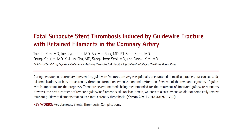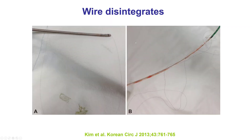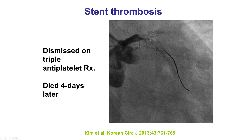The last case is a published example of what can go wrong if guidewire fracture filaments are retained and not treated. Similar to cases 1 and 3, there was guidewire entrapment followed by fracture. Snares were used; there was significant unraveling. Despite removing some filaments, remaining filaments were visible on intravascular ultrasound protruding into the aorta. The patient was dismissed on antiplatelet therapy but died four days later — presumably because the left main was thrombosed due to the wire filaments.